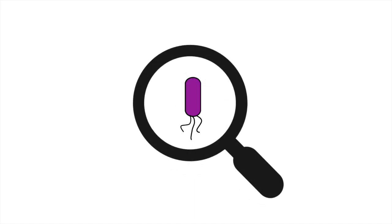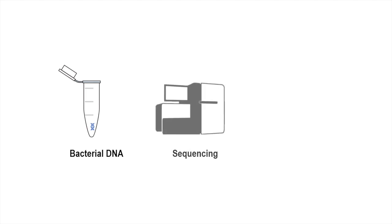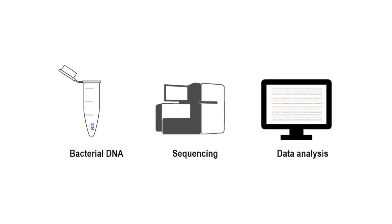Whole genome sequencing is the most powerful genotyping method to identify sources of pathogen contamination. By obtaining DNA, sequencing it, and analyzing it using computational tools, we can compare all the DNA characters comprising the genome of bacteria.